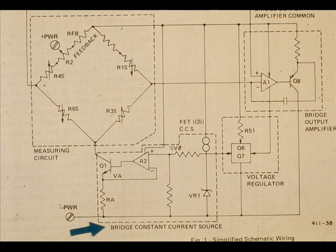The bridge constant current source maintains a constant current across the bridge independent of the supply voltage. It also provides temperature compensation.